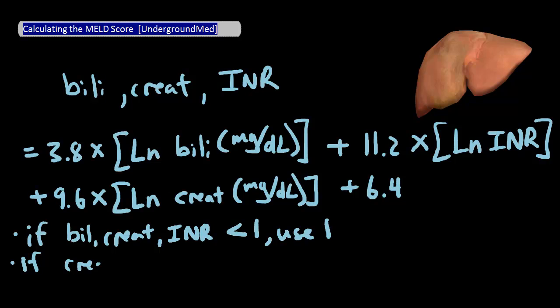Similarly, if the creatinine level is above 4, then use 4 instead of the actual number for the creatinine. This helps to confine the score range on the higher side.